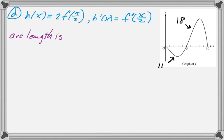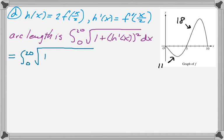The arc length of h from 0 to 20 is the integral from 0 to 20 of √(1 + (h')²)dx. That's going to work out by replacing h'(x) with f'(x/2), so we get the integral of √(1 + (f'(x/2))²)dx.